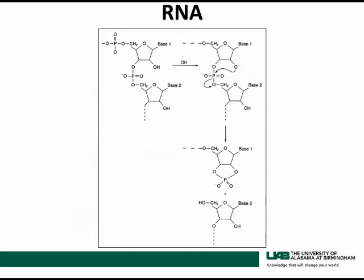Alkaline lysis buffer also promotes destruction of RNA. The difference between RNA and DNA is that DNA has deoxyribose sugar where the OH on the two-prime carbon is missing, but it is present in RNA. Under alkaline conditions, this OH group attacks the phosphate group to form a cyclic compound, destroying the phosphodiester bond and causing RNA to digest itself. This is one of the many advantages of using alkaline lysis buffer for DNA isolation.